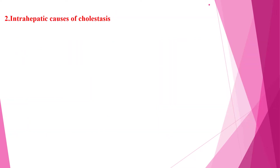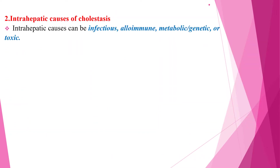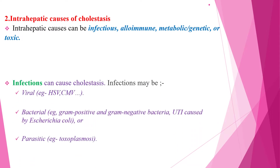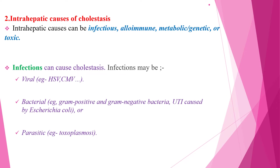The second category is intrahepatic causes of cholestasis. Intrahepatic causes can be infectious, autoimmune, metabolic, genetic, or toxic. From infectious causes, viral and bacterial — including gram-positive and gram-negative bacteria, mainly urosepsis and intra-abdominal infections — are the most common bacterial causes of cholestatic jaundice in newborns. From parasitic causes, toxoplasmosis can also cause intrahepatic cholestasis.